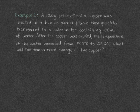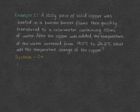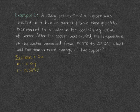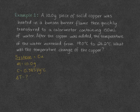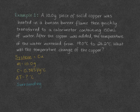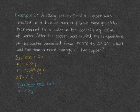To do this problem, we need to assign system and surroundings. Our system is going to be copper. We know the mass of our system is 10.0 grams. The specific heat capacity of copper is 0.385 joules per gram degree Celsius — you can get that from page 3 of the Chem 30 data booklet. We're solving for the change in temperature of copper. Our surroundings are going to be water, with a mass of 150 grams, because 1 milliliter of water equals 1 gram.